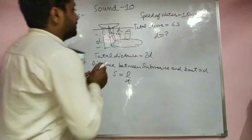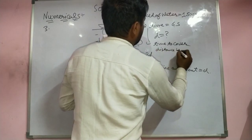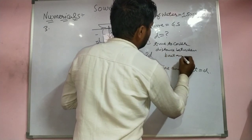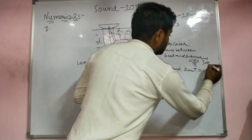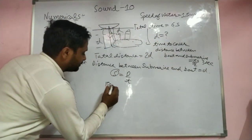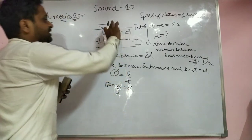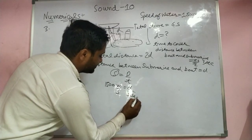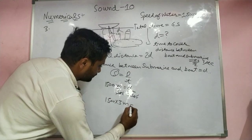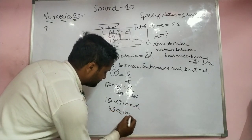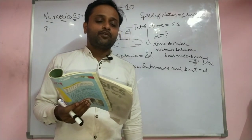The second method: since the total time is six seconds, the one-way time is three seconds. Using one-way distance D and time three seconds: 1500 = D / 3, so D = 4500 meters. Both methods give the same answer. In the next lecture we will discuss the fourth and fifth numericals. Thank you.